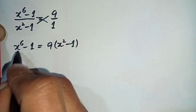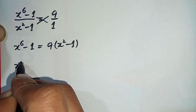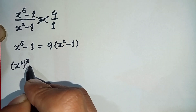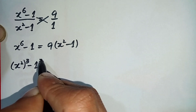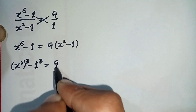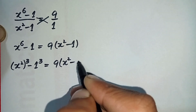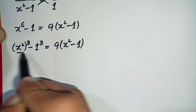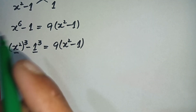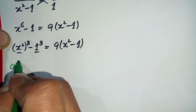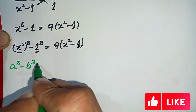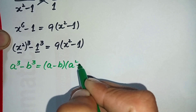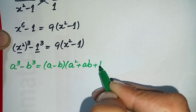We can write x raised to power 6 as (x squared) whole raised to power 3, because multiplying those two powers gives x to the power 6 back. We can also write 1 as 1 cubed. This matches the famous cubic algebraic identity: a cubed minus b cubed equals (a minus b) times (a squared plus a times b plus b squared).